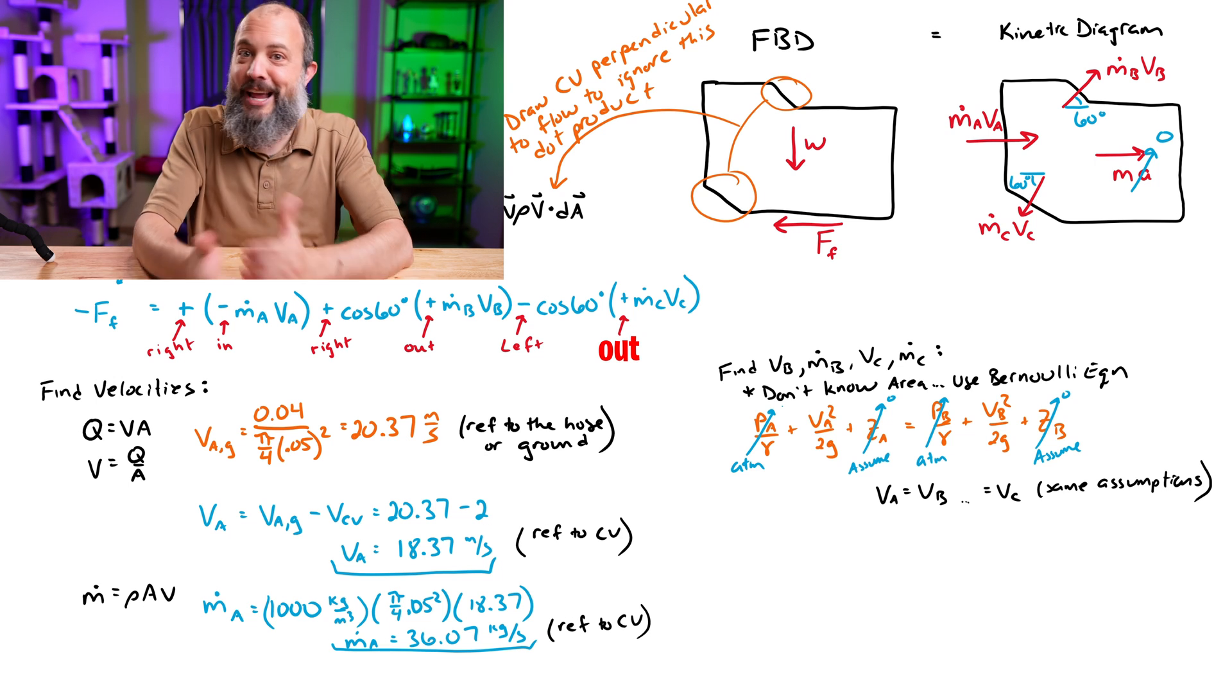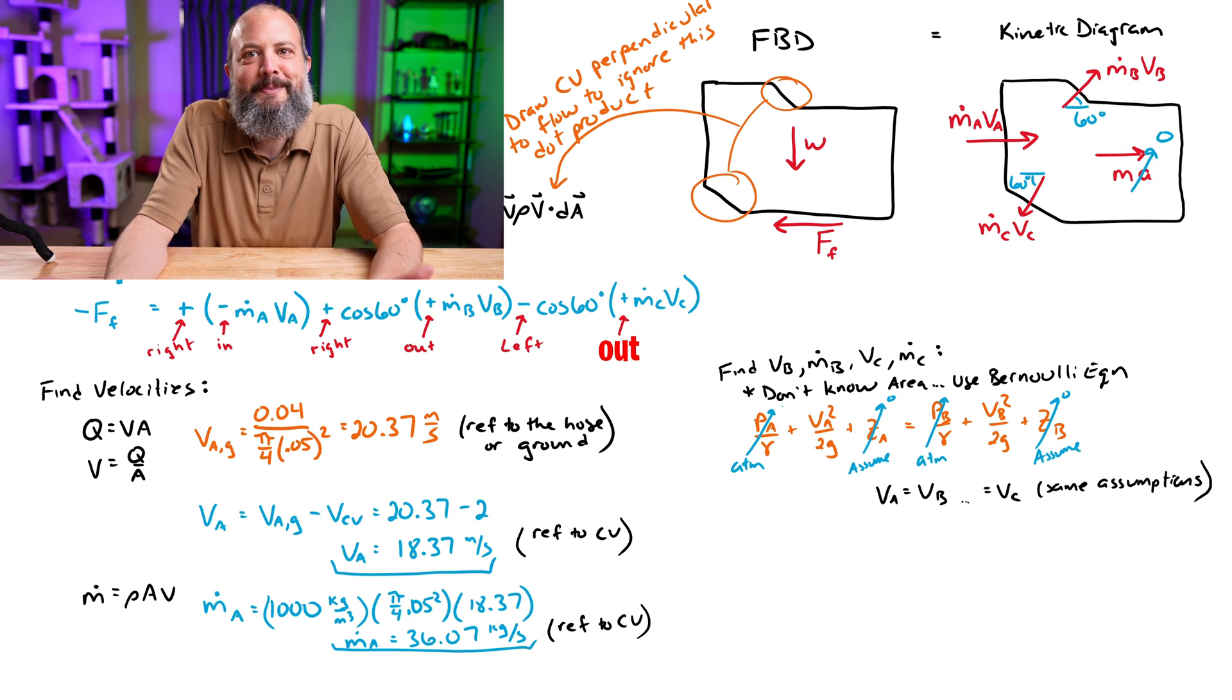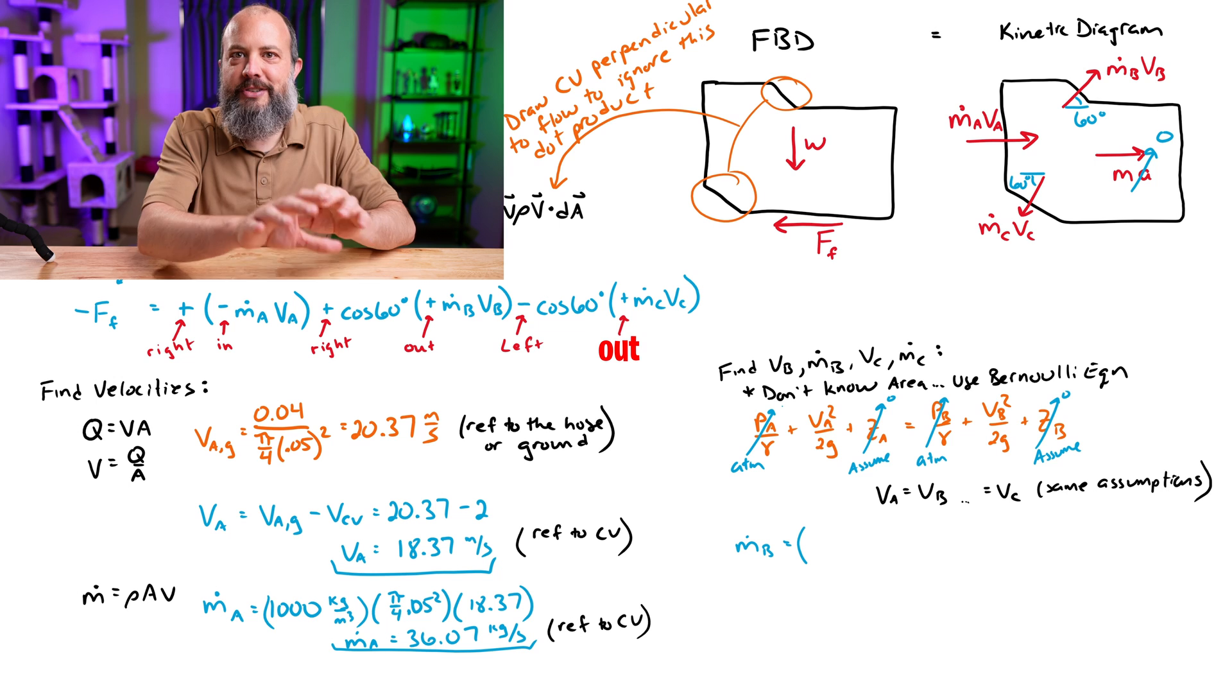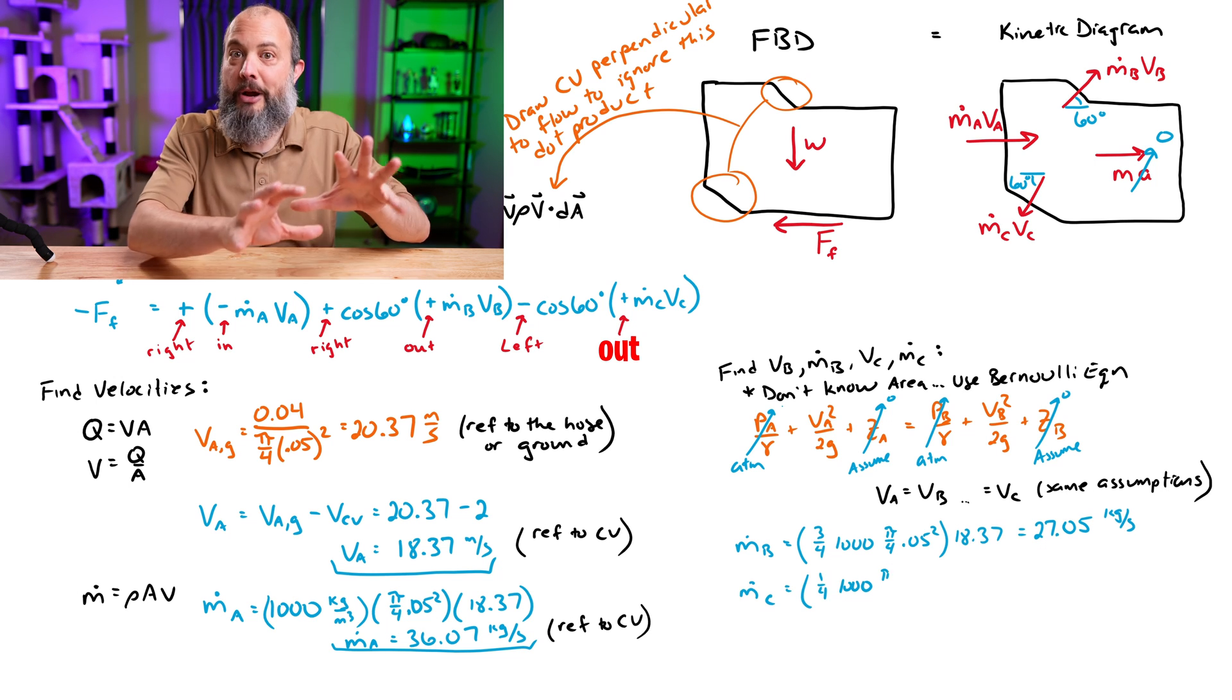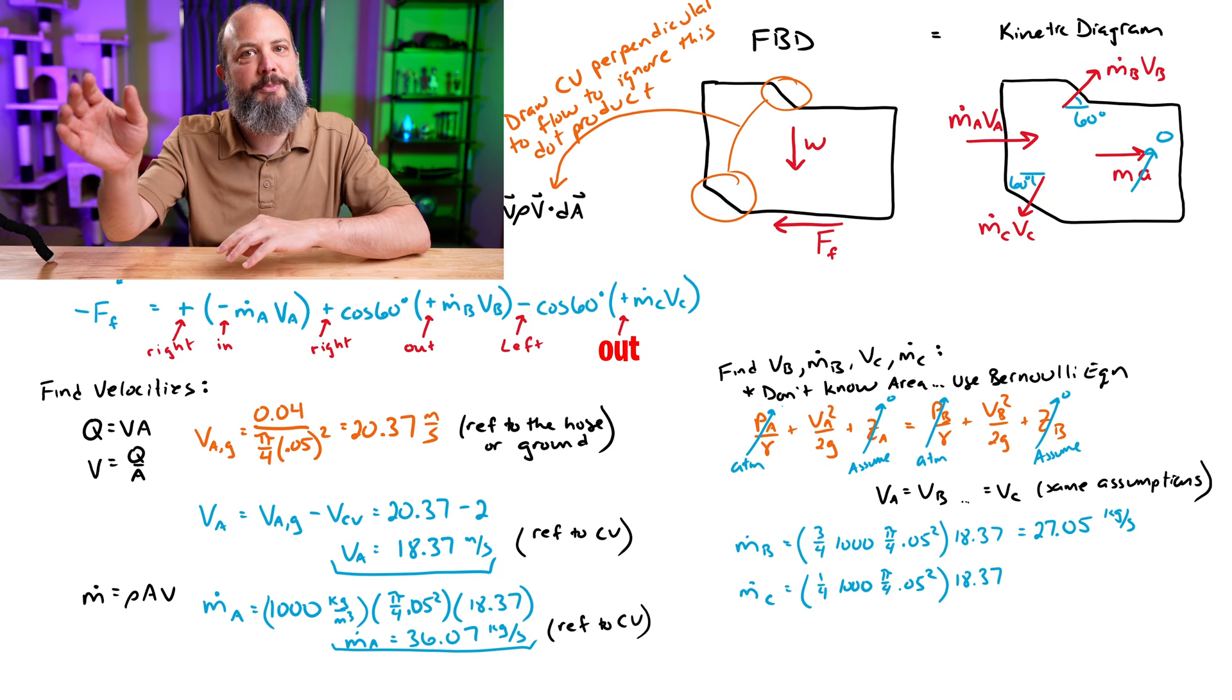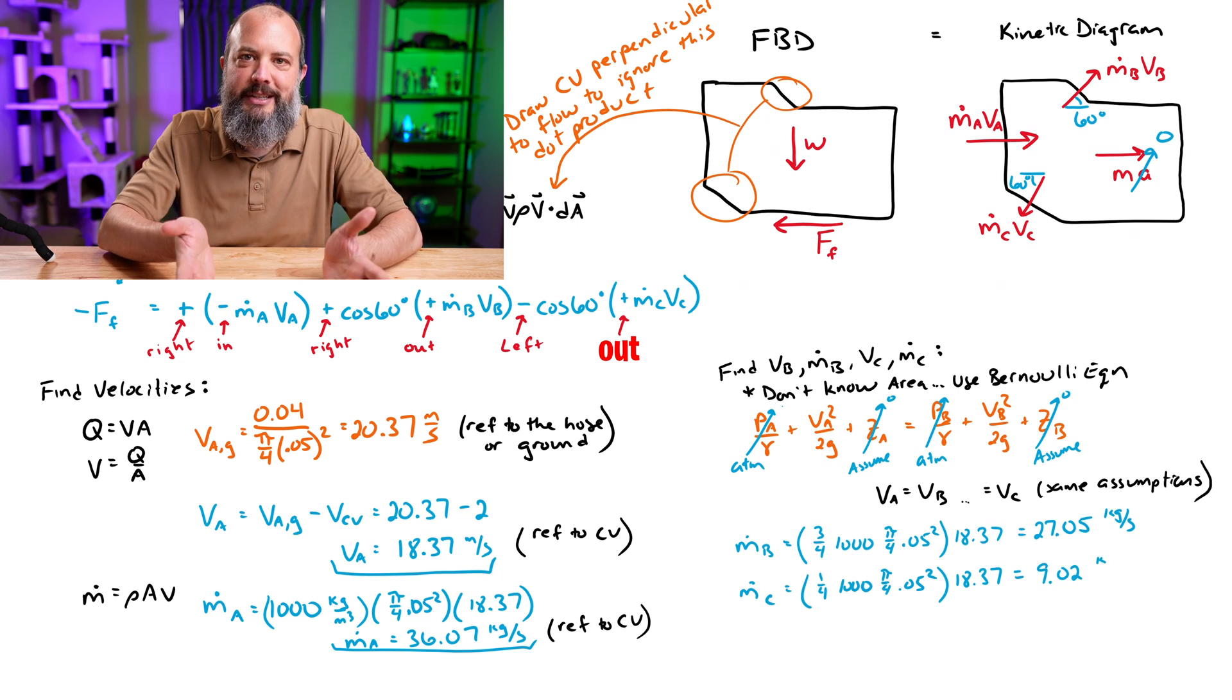And if all the velocities are the same, that is going to make it a little bit easier. So since I know that three-fourths of the volumetric flow rate goes to B and one-fourth goes to C, the mass flow rate also splits. Three-fourths of it goes up to B, one-fourth of it goes down to C. And with that, it's time to plug all the numbers back into the original equilibrium equation.